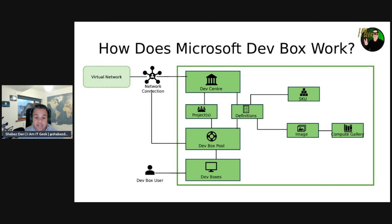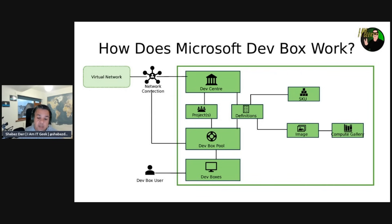You can use a Microsoft-hosted network connection or bring your own Azure network connection. You might use an Azure network connection if you need control over the virtual network, require access to corporate resources, or need to authenticate to a dev box with an Active Directory account. Developers can create a dev box from a dev box pool using the developer portal, choosing from a specific pool based on the VM image, compute resources, or location. Once running, users can connect via the Remote Desktop client like Windows App or directly from the browser, and have full control over the dev boxes they created.